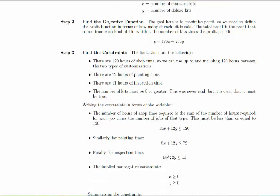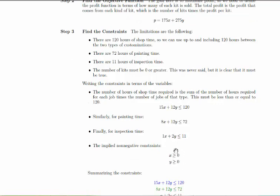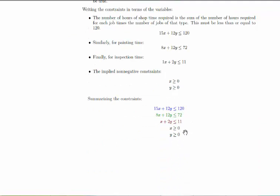And if you do the same thing for painting time and for inspection time, this is what you get, as well as the non-negative constraints that we mentioned that are implied but not stated. So these are the five constraints we have. The three that were stated in the problem and the two implied ones. And I've color-coded these so that when we draw the lines, we can keep track of which line corresponds to which inequality, which constraint.